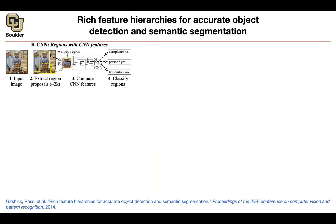You take each one of those boxes and warp the image inside that box. Why do you warp it? Because at that time, convolutional neural networks were only able to work with a fixed size rectangular image. If you remember AlexNet, it used 224 by 224 pixels. So you take your image, warp it to have that corresponding size, and then the convolutional neural network comes in — they're going to use it as a feature extractor.